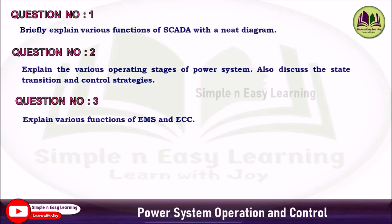Question 3: Explain the various functions of the Energy Management System and Energy Control Center — draw a diagram and explain the functions. Question 4 (Priority 4): Explain the Phasor Measurement Unit. These are the selected important questions in Unit 5.